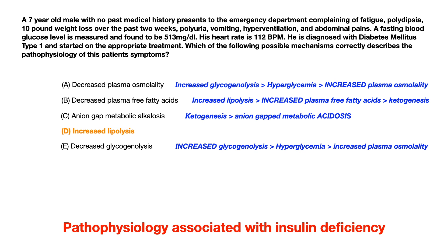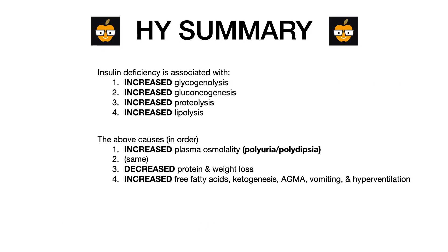This is very high yield because it involves a lot of different pathophysiology and you need to know the nitty-gritty details. If you're able to connect what's happening clinically to what you've already memorized biochemically, it makes all of this easier. The high-yield takeaway is that insulin deficiency is associated with: one, increased glycogenolysis; two, increased gluconeogenesis; three, increased proteolysis; and four, increased lipolysis.